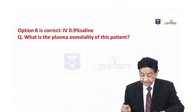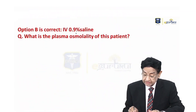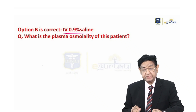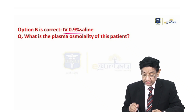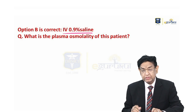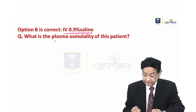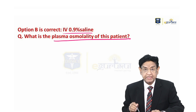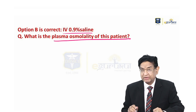The most appropriate next step in the management of this patient is: the answer is that you give IV 0.9% saline. Before I go and discuss, let me ask you: what is the plasma osmolality of this patient? Write down the answer, just do the calculation.